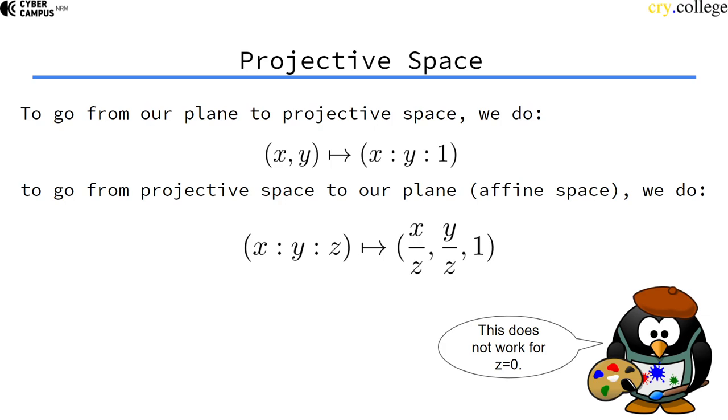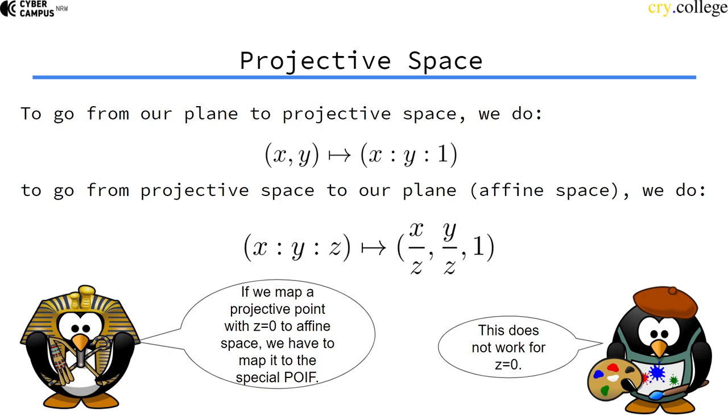So what do we do if z is equal to zero? Well, if z is equal to zero, then actually we have a point that has no equivalent on the plane. And if z is zero, we map it back to this mysterious point, the point at infinity at the affine plane.